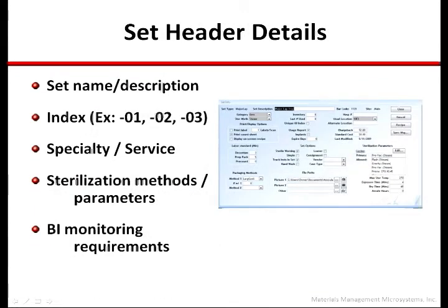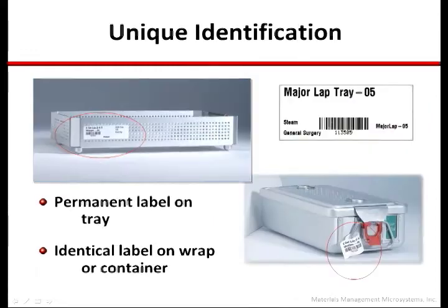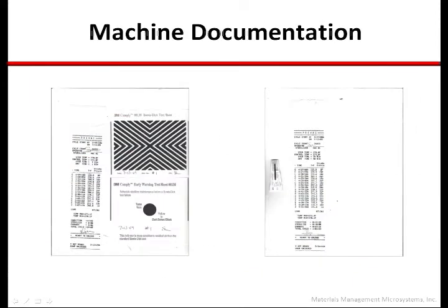The database is comprised of Set Header Details data and can include a variety of information beyond simply the set name and description. The Set Header Details information is included on the permanent barcode label affixed to the tray or basket, as well as on the identical external label affixed to the wrapper or container every time the set is processed. The system is designed to digitally capture all aspects of mechanical monitoring and machine call processes for paperless record keeping and easy access to historical information in the event of a JCO audit or root cause investigation.